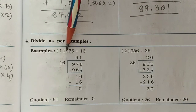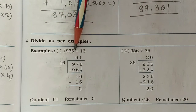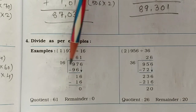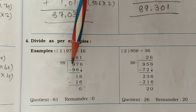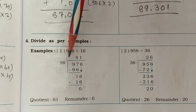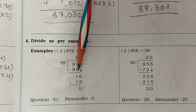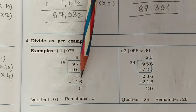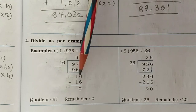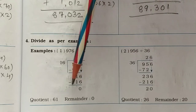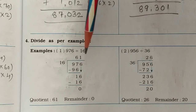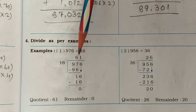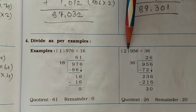Let's see the first example: 976 divided by 16. So 976 ÷ 16. Here, 16 sixes are 96, so we look at 97 — subtract and you get 1, then bring down the 6. Now 16 ones are 16, subtract and you get zero remainder. So 61 is your answer. This is a simple division.